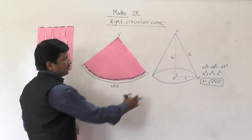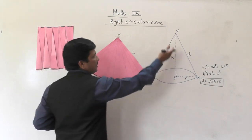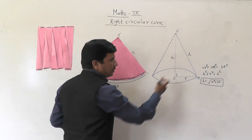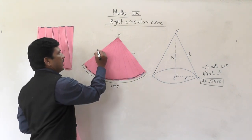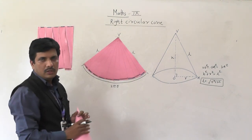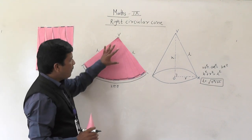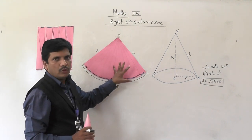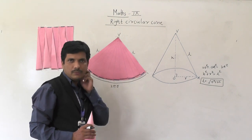And this distance is the slanting height — this is l, the slanting height — because this distance is going to remain the same, constant. So that is the slanting height. This also we can say l, the slanting height of the cone. So now with the help of this, we are going to derive the formula for curved surface area and total surface area.